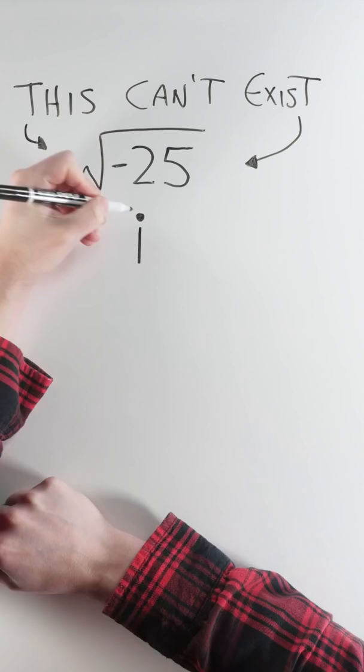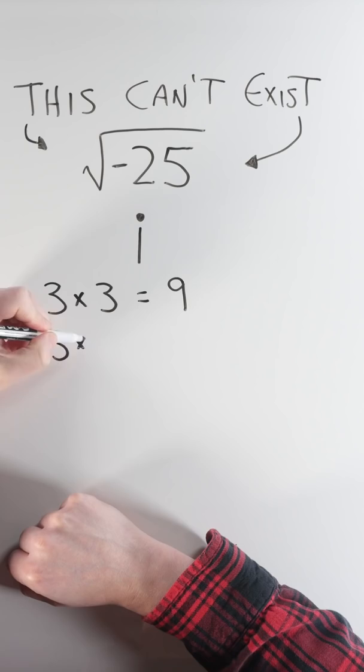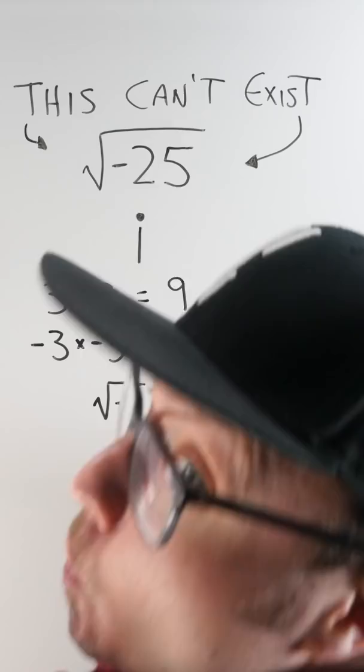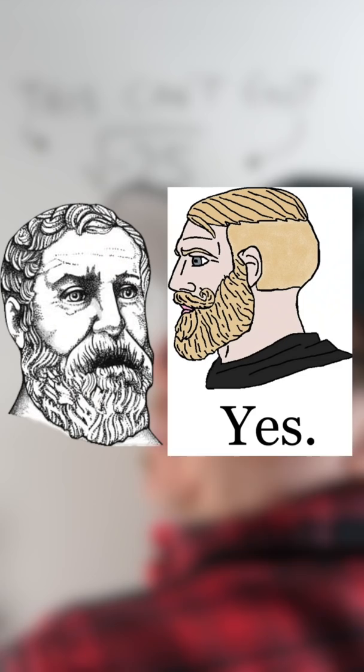There's no number that can be multiplied by itself to yield a negative result. So like 3 times 3 equals 9, but negative 3 times negative 3 also equals 9. Which is why there's no square root of negative 1. So Hero of Alexandria just pretended there was, and we call it i.